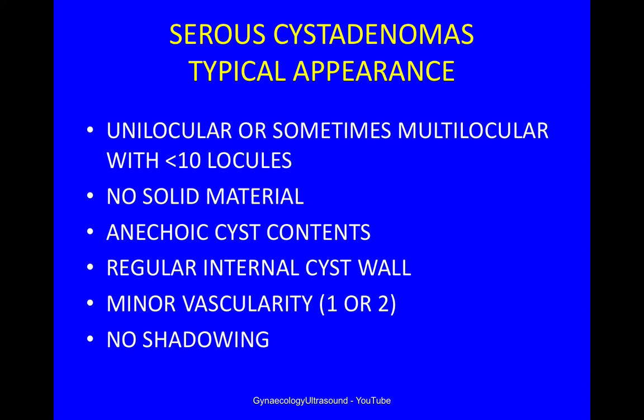The typical appearance of a serous cystadenoma is a unilocular or sometimes multilocular cyst with fewer than 10 locules, no solid material, anechoic cyst contents or occasionally low level echogenicity, a regular internal cyst wall, minor vascularity — score of 1 or 2 — and no shadowing, though sometimes there is shadowing, which is a benign feature.